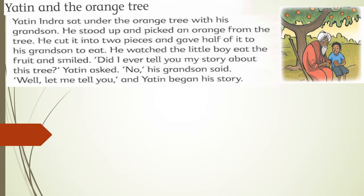Now let's read and listen. Story time! Yatin and the Orange Tree. Yatin Indra sat under the orange tree with his grandson. He stood up and picked an orange from the tree. He cut it into two pieces and gave half of it to his grandson to eat. He watched the little boy eat the fruit and smiled. 'Did I ever tell you my story about this tree?' Yatin asked. 'No,' his grandson said. 'Well, let me tell you,' and Yatin began his story.